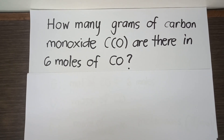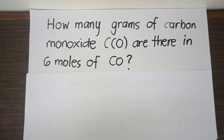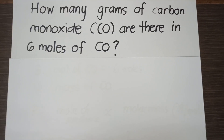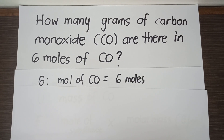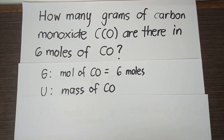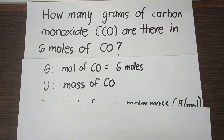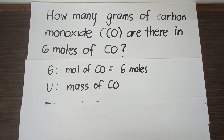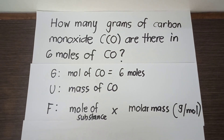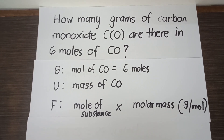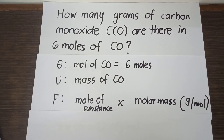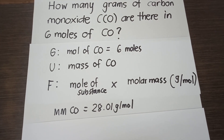The second example: how many grams of carbon monoxide (CO) are there in 6 moles of CO? This is a mole-to-mass conversion. Following the GUFSA format: the given is 6 moles of CO, and the unknown is the mass of CO. The formula is moles times molar mass. Since the molar mass of CO is not given, we calculate it as 28.01 grams per mole.